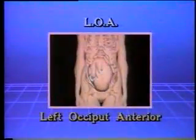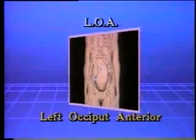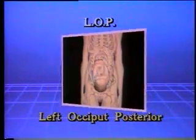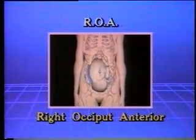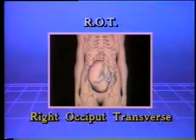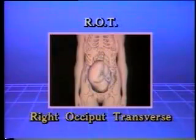This is an LOA position, which stands for left occiput anterior. LOP stands for left occiput posterior. ROA is right occiput anterior. These are common fetal positions. This is an ROT position — right occiput transverse. Transverse is used when the presenting part is neither posterior nor anterior to the maternal pelvis, but rather directly to the side.